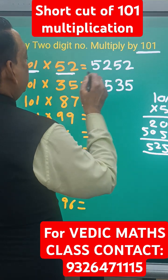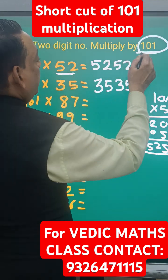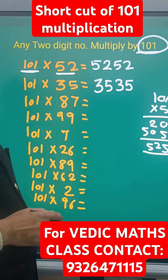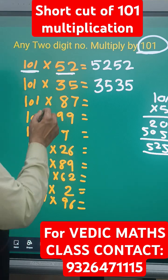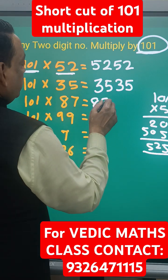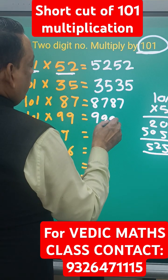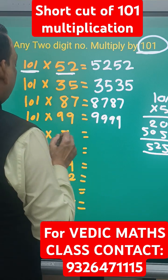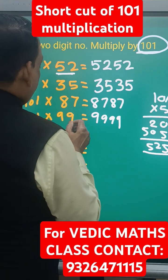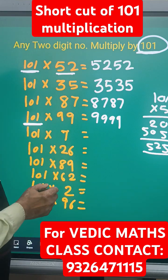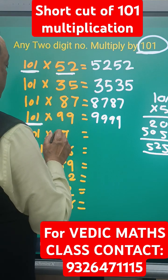Whenever any two-digit number is given and the other number is 101, this is called the special multiplication. So 87 gives 8787, 99 gives 9999. But make sure one number has to be 101 and the other is whatever number. Now, if it's a single-digit number like 7, we cannot simply write 77.